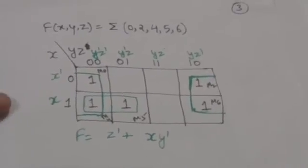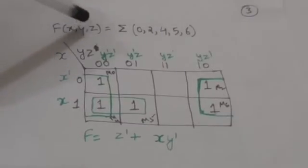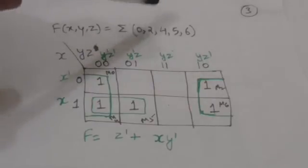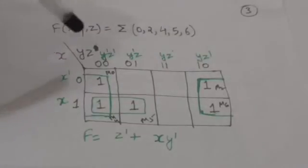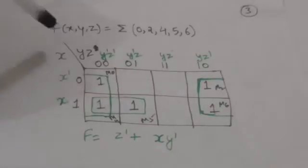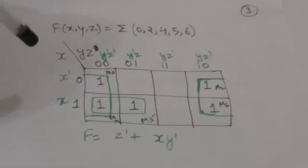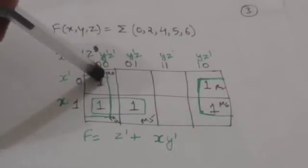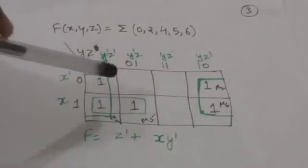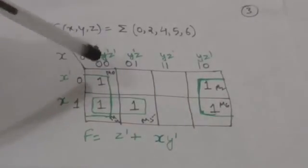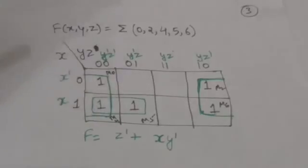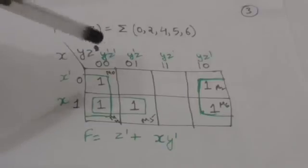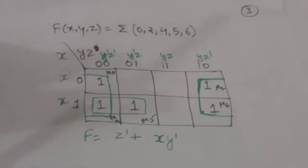Now suppose we have to minimize function F of three binary variables X, Y and Z, where F is the sum of min terms M0, M2, M4, M5, M6. First, make a K-map for three variables and mark the squares by 1 whose min terms are M0, M2, M4, M5, M6. The number of squares in any group must be a power of 2 — that is, 1, 2, 4, 8, or 16.